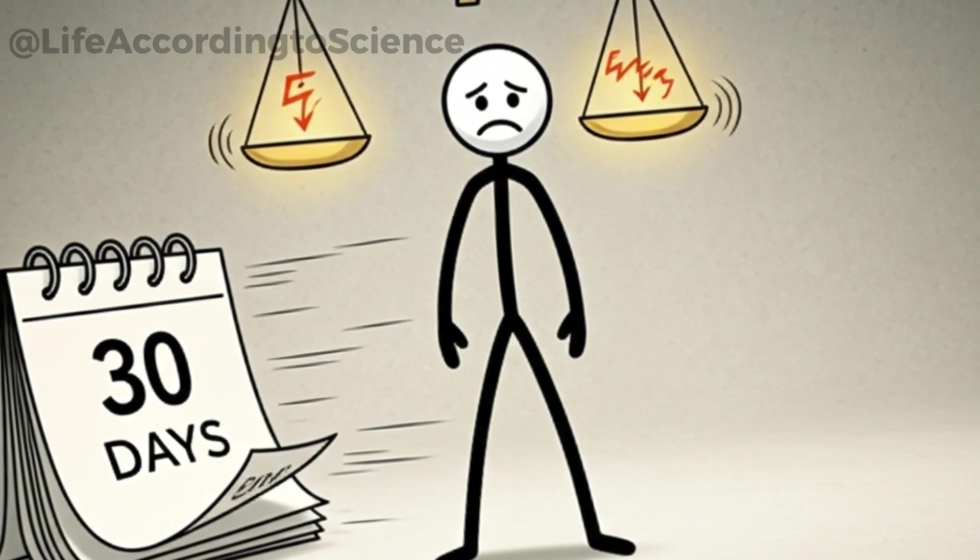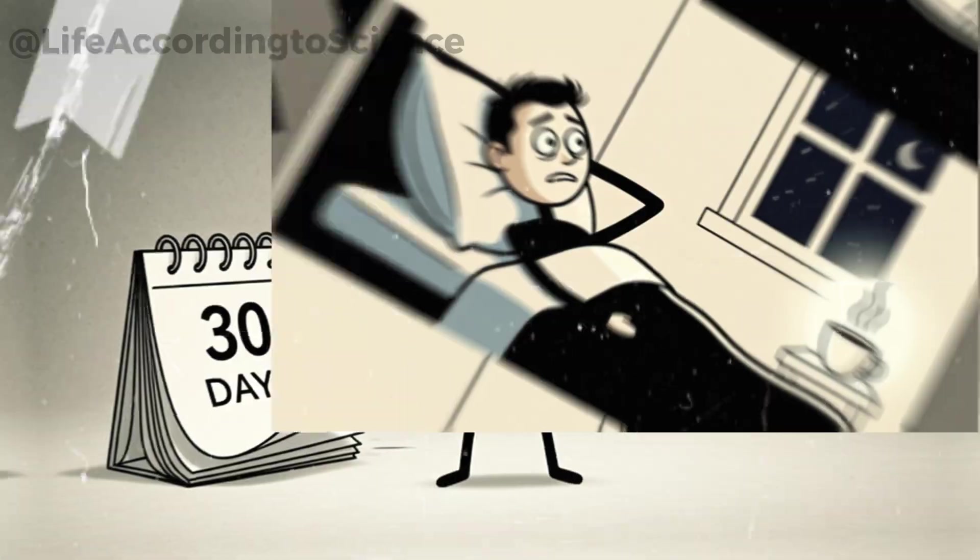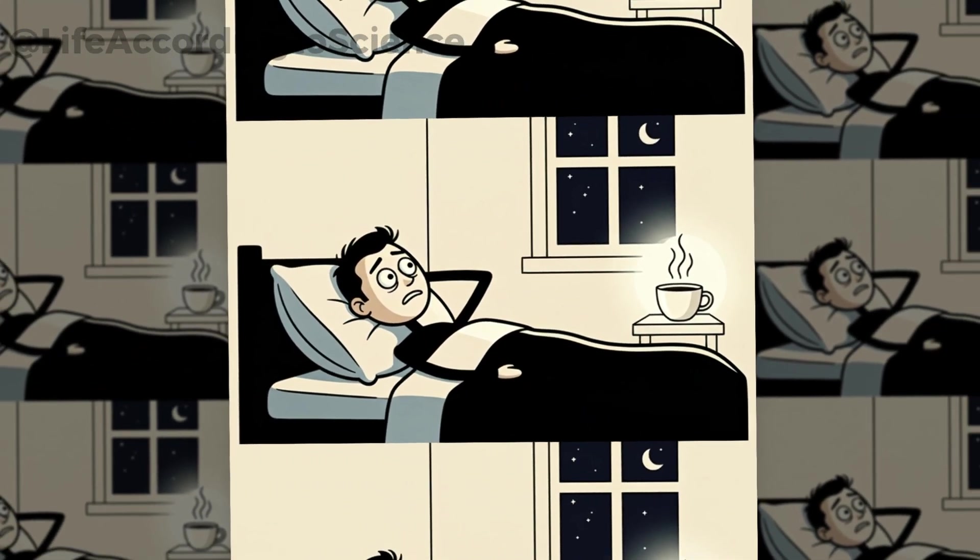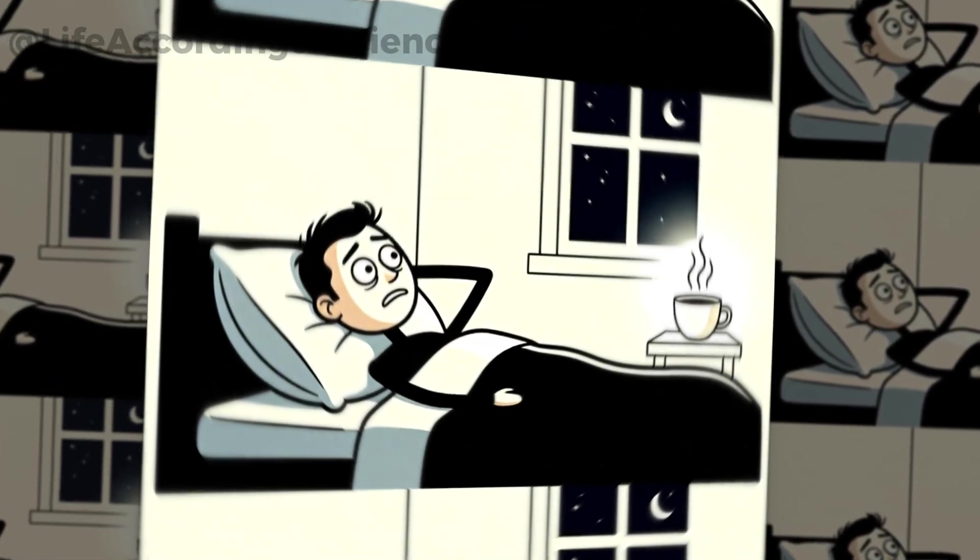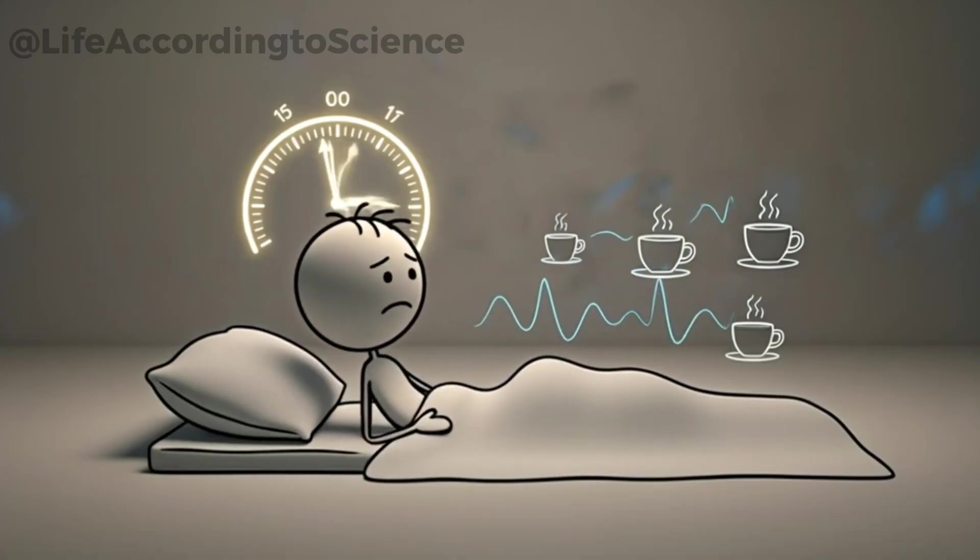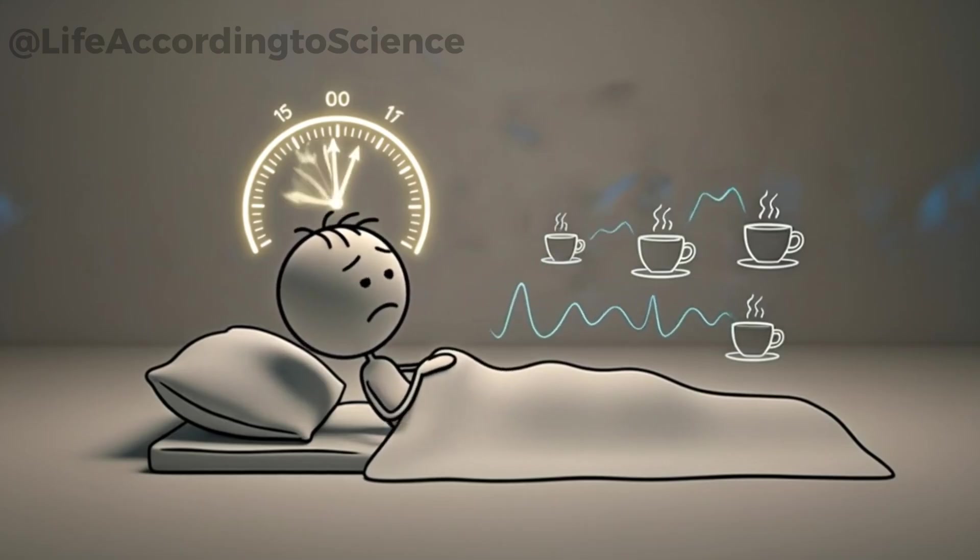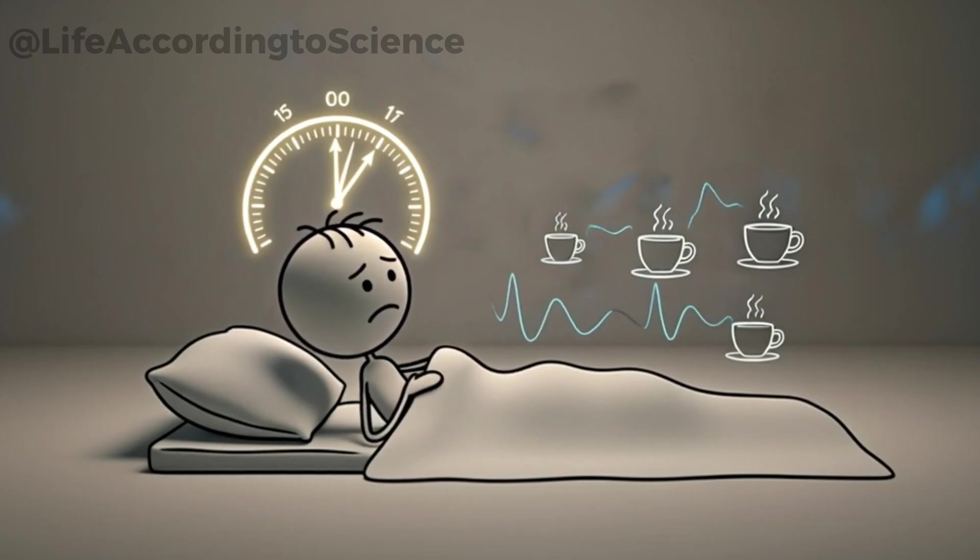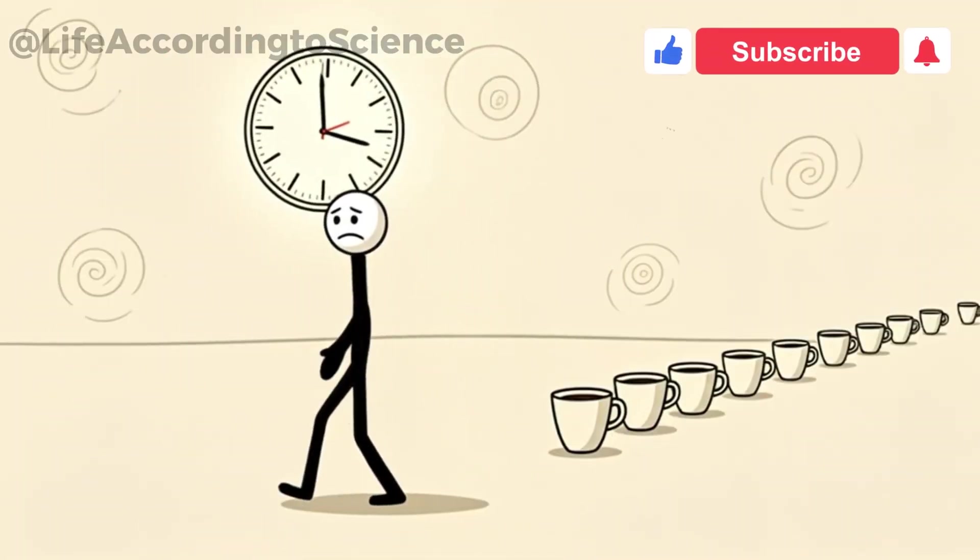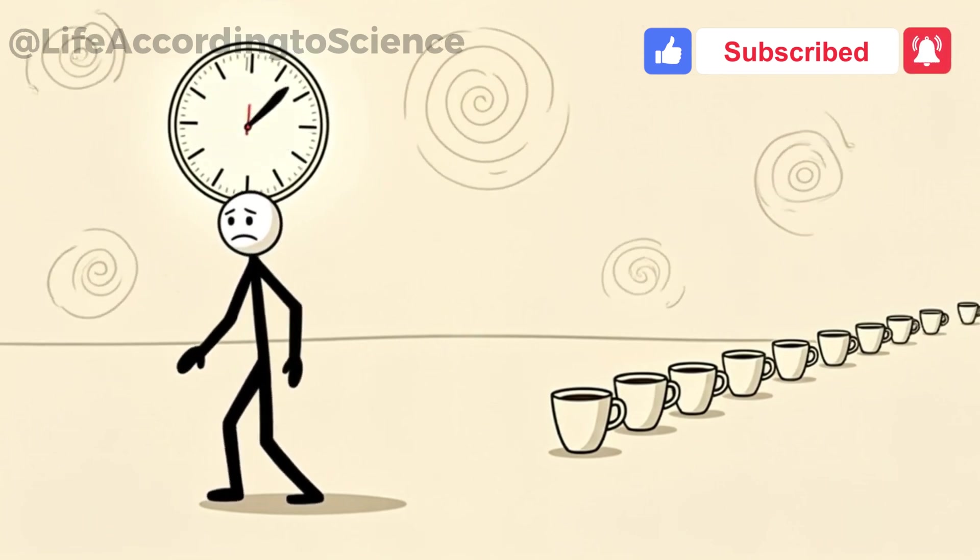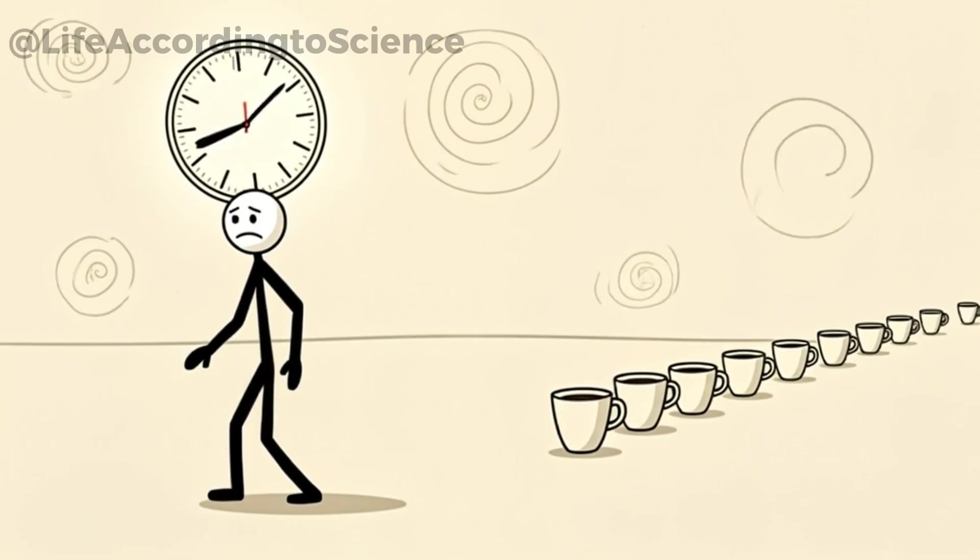Sleep is one of the first victims of excessive coffee. Even if you swear you can drink coffee at night and sleep fine, research shows caffeine lingers in your system for up to 10 hours. That means your evening rest is likely lighter and less restorative than you think. Caffeine delays the release of melatonin, the hormone that tells your body it's time to sleep. With five cups daily, your circadian rhythm, the natural clock inside you, starts to shift, often without you realizing it.